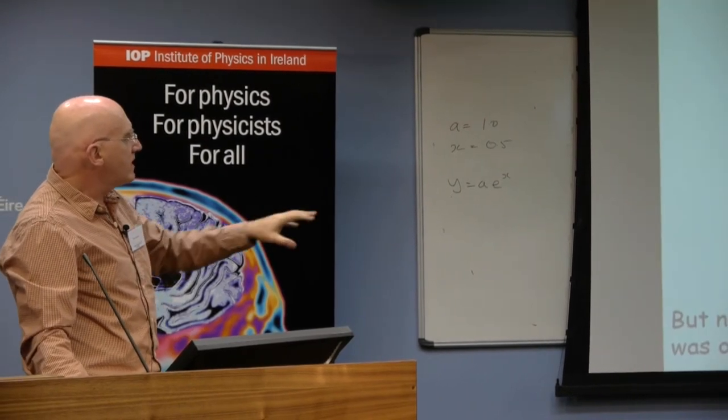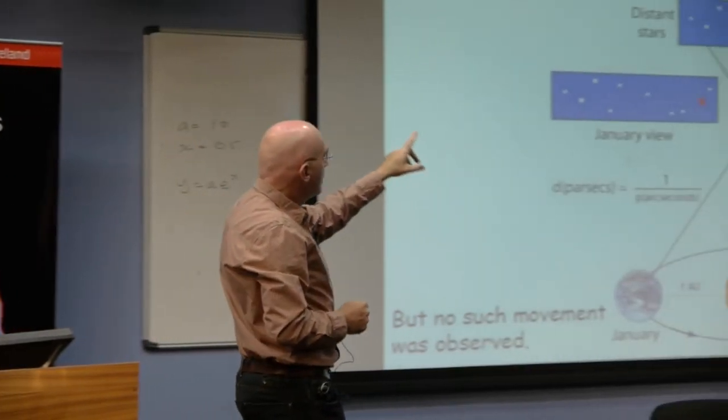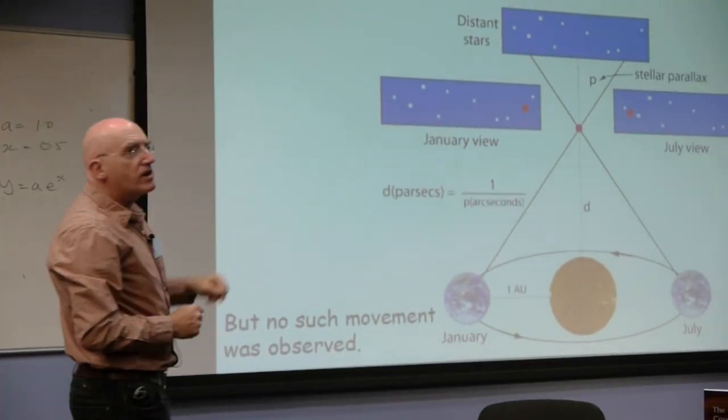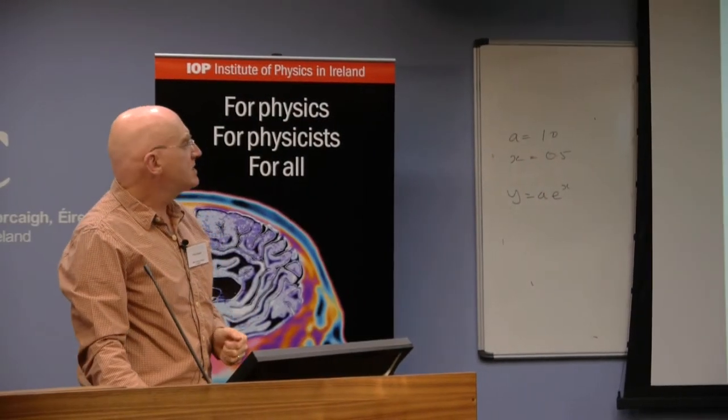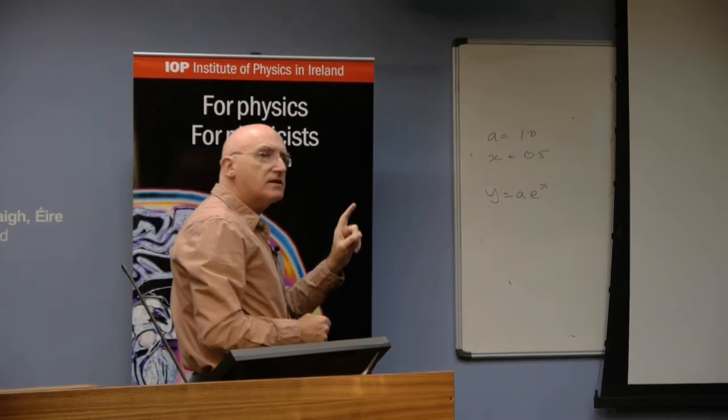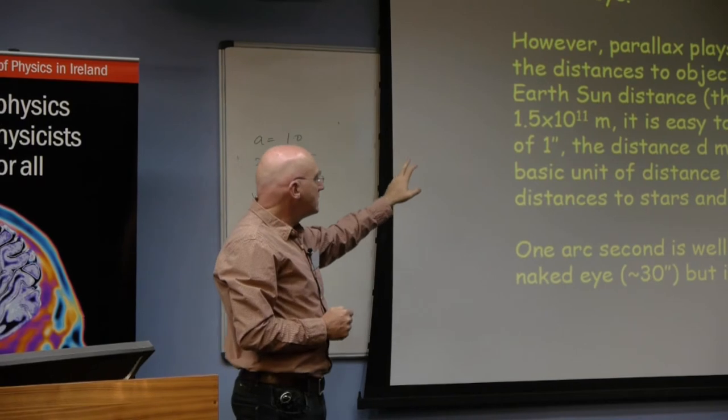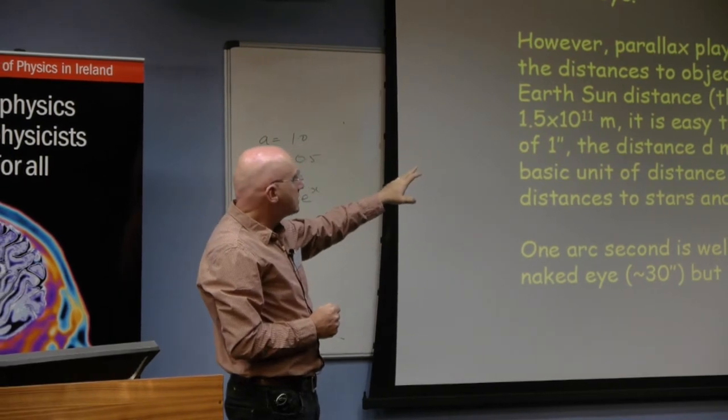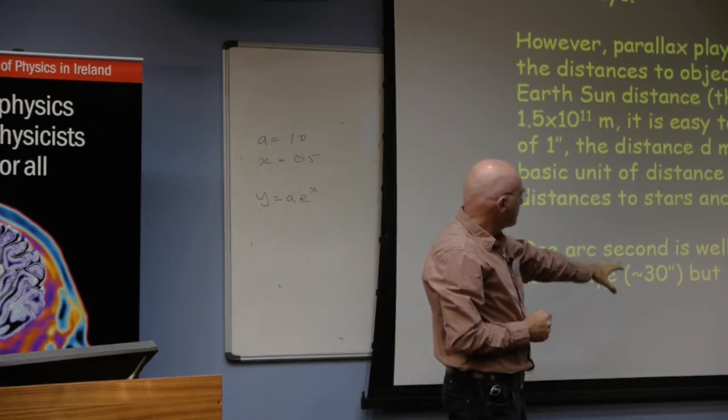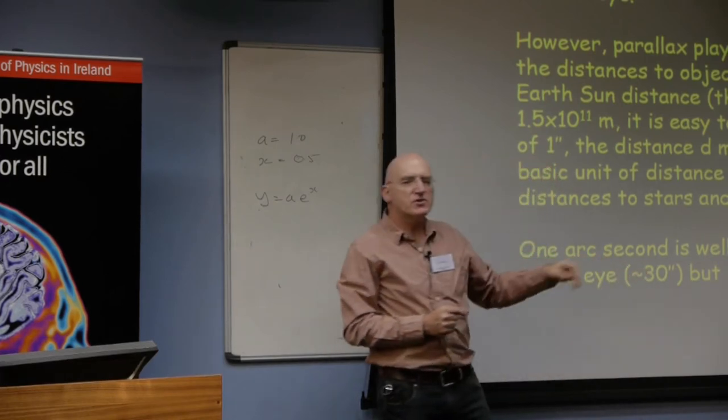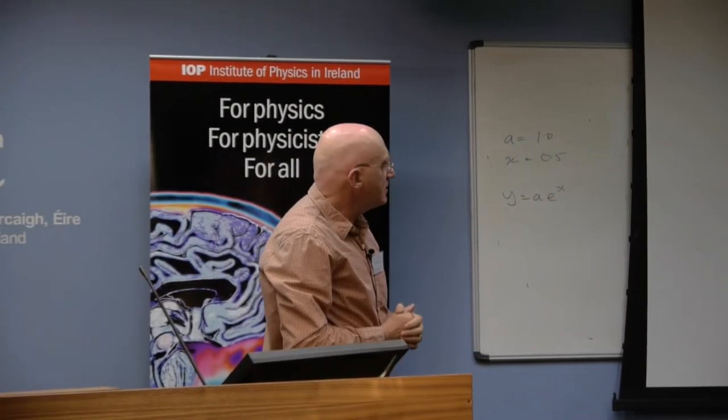We now know that this really is the situation and the problem is that this parallax, although it's there, is actually very hard to measure. The actual angular scale of parallax is typically only of the order of about one arc second, which unfortunately is impossible to see with the naked eye.